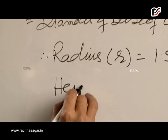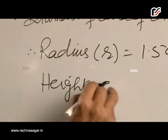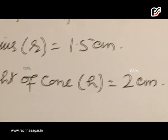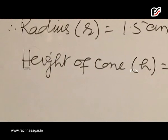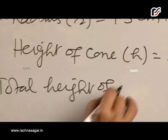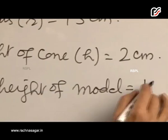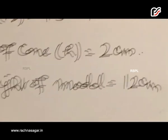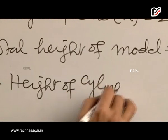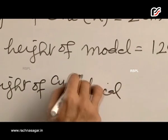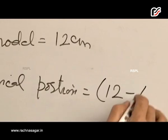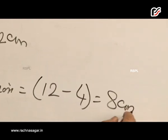Height of cone h is 2 cm. Therefore, height of cylindrical portion is 12 minus 4 equals 8 centimeters.